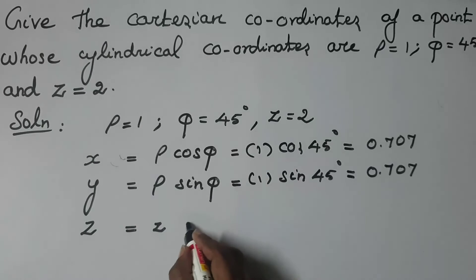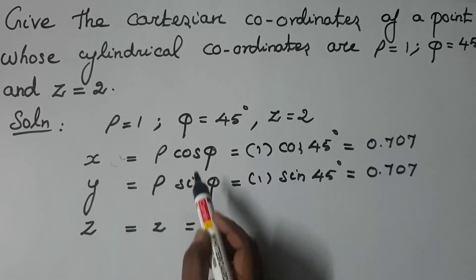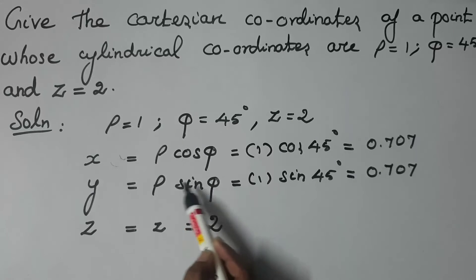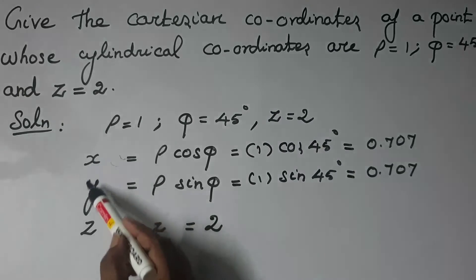Then what is the Z value? Z is equal to 2. So simply write 2 value. So by using this equation, ρ cos φ, ρ sin φ, and Z value, we have easily calculated the coordinate points for the Cartesian system.